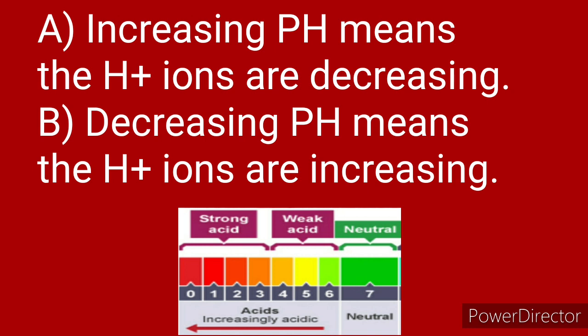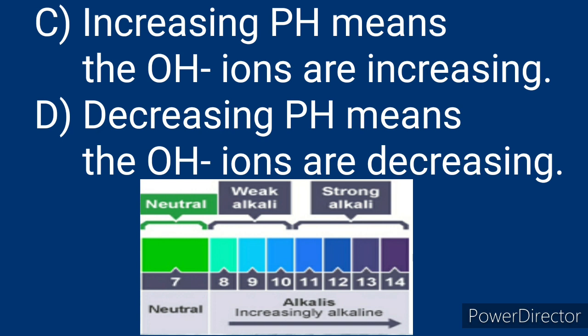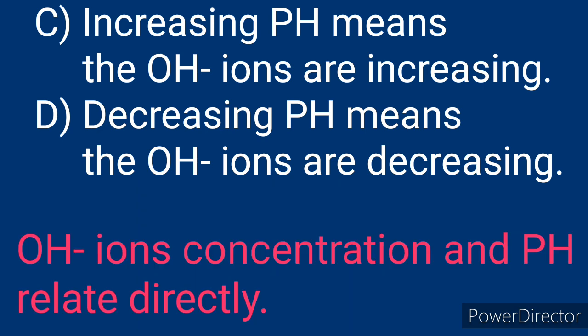Regarding the pH scale: increasing pH means H+ ions are decreasing, and decreasing pH means H+ ions are increasing — so H+ ion concentration and pH relate inversely. Also, increasing pH means OH⁻ ions are increasing, and decreasing pH means OH⁻ ions are decreasing — so OH⁻ ion concentration and pH relate directly.